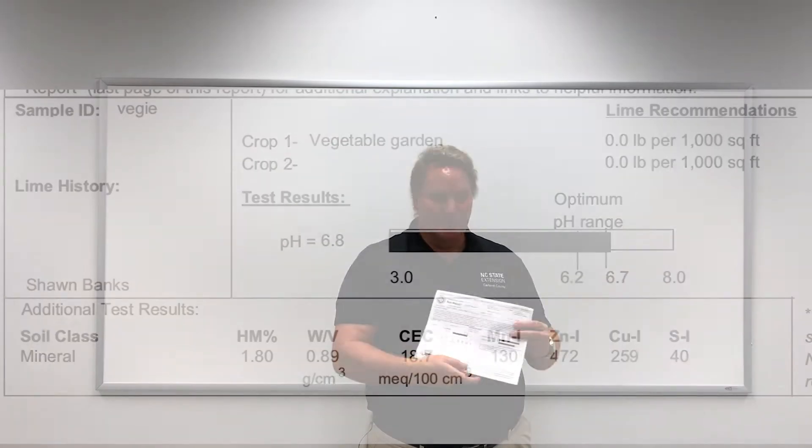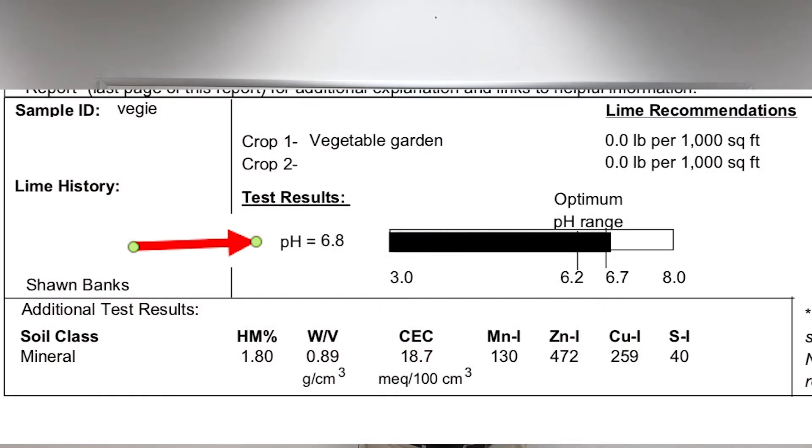Make sure to read those instructions because they can be very important. Let's take a closer look at the pH on our sample here. The pH is 6.8, so it's right there in that range where it needs to be, and they're not recommending any lime be added.